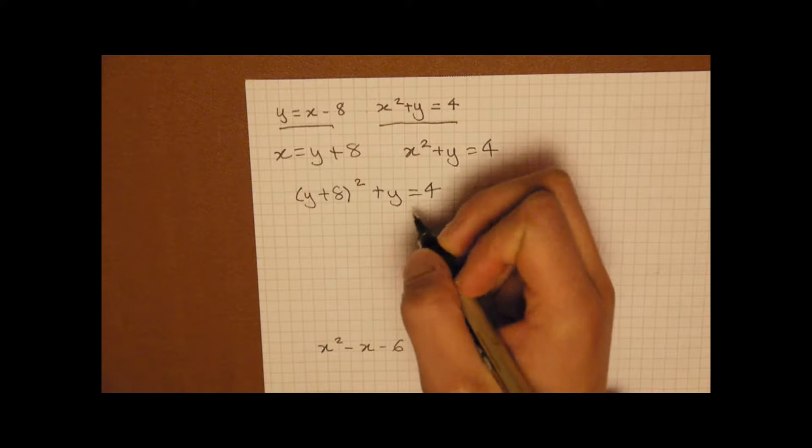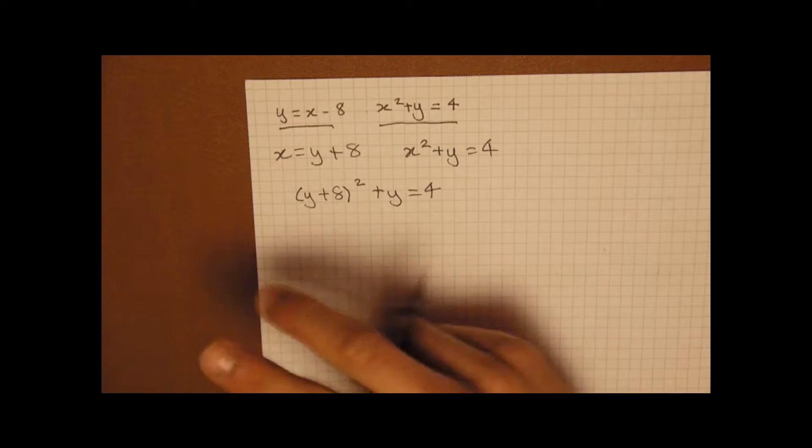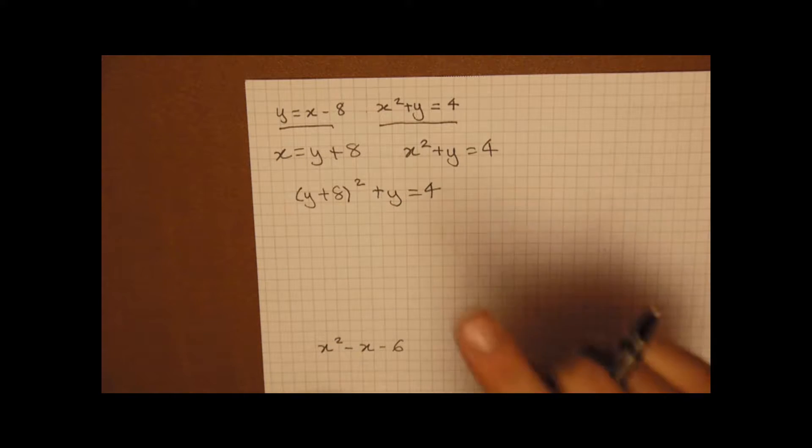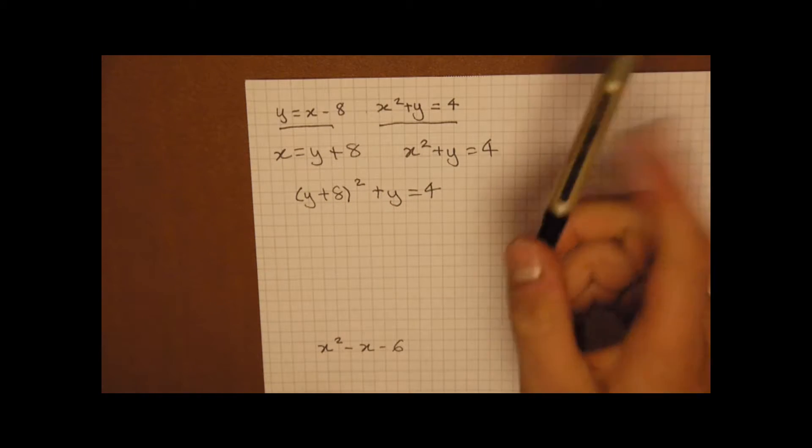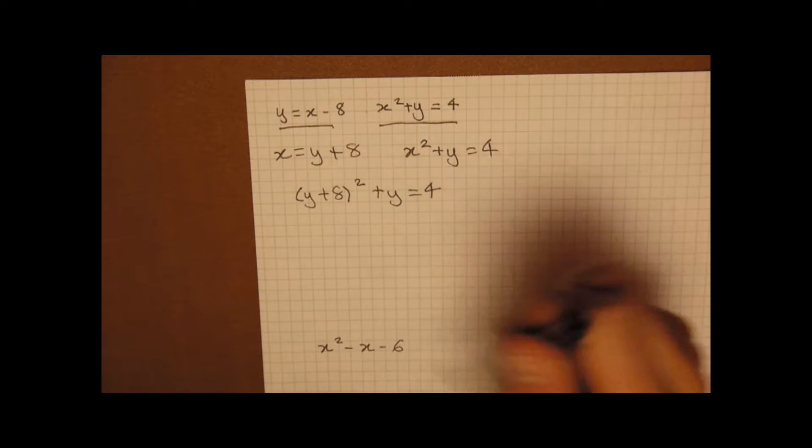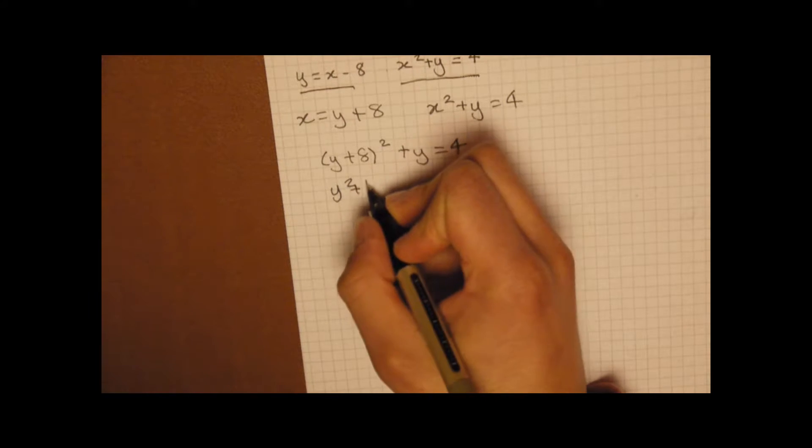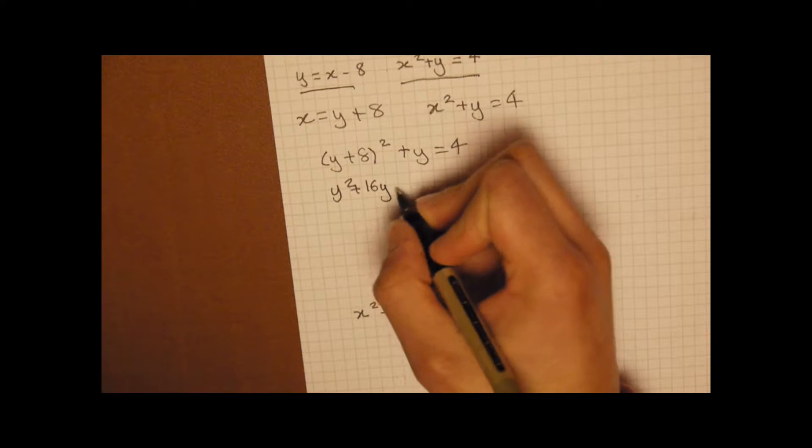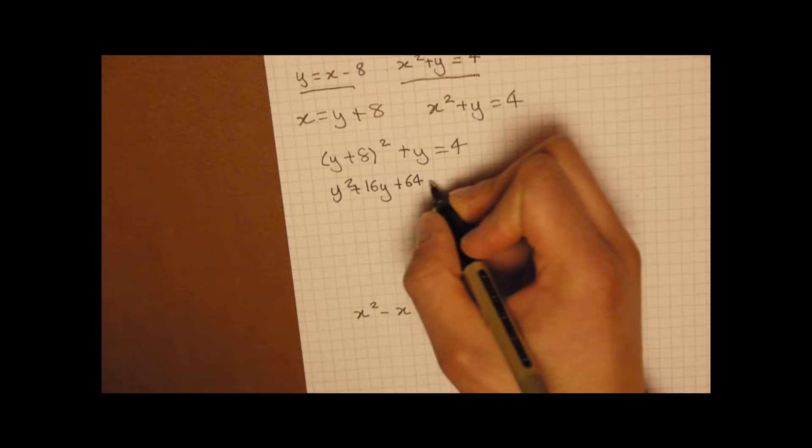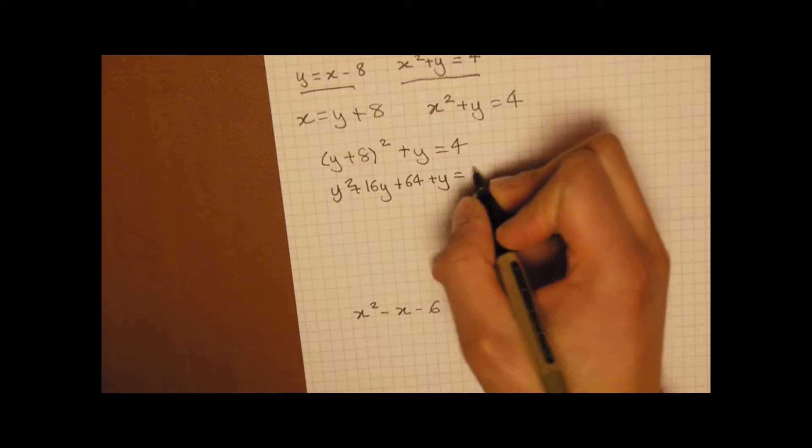Now you could also do it in terms of x, but I've done it this way even though it's harder, just to give you more of a sense of, because most questions won't just give you a single term. You will have to expand the brackets. So what you should end up with is y squared plus 16y plus 64 plus y equals 4.